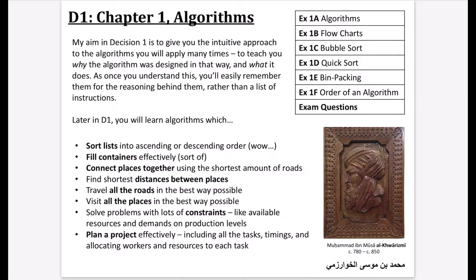Later on, we'll solve problems with lots of constraints like available resources or demands on production levels. In the last chapter, we'll plan projects effectively, including all the tasks, timings, and allocating workers and resources to each task. This is the summary of what goes on in Decision 1 and Chapter 1.